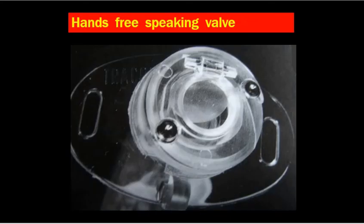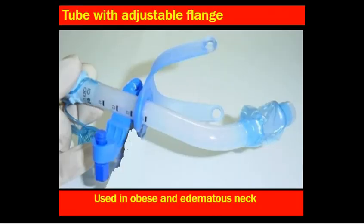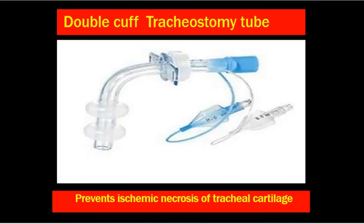There are tubes called hands-free speaking tubes. Similar to Fuller's tube where the patient closes the outer tube to speak, in the hands-free speaking valve tube, the valve closes during expiration, allowing the patient to speak through the mouth even when there is minimal airway. For obese or edematous-neck patients, tubes with adjustable flanges are used to avoid ill-fitting or displaced tubes. Double cuff tracheostomy tubes prevent ischemic necrosis of tracheal cartilage and can be used in children or those with weak trachea. Nowadays, high-volume low-pressure cuffs are standard, reducing the risk of tracheal injury.